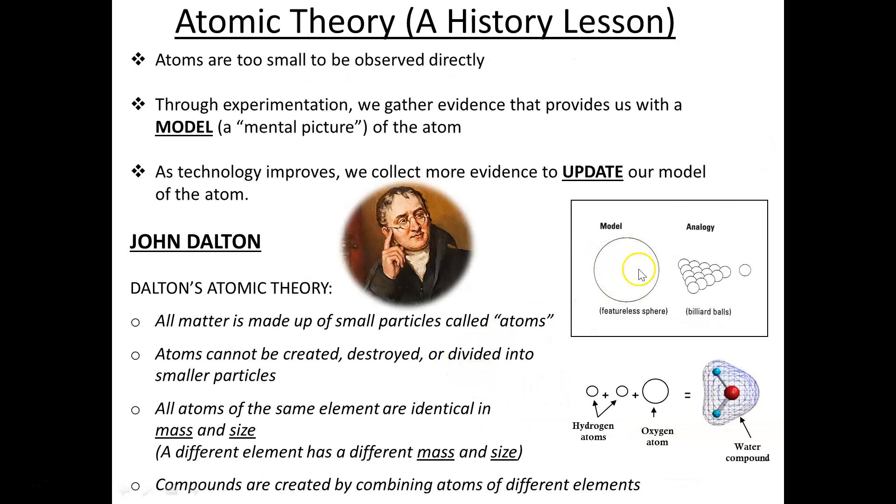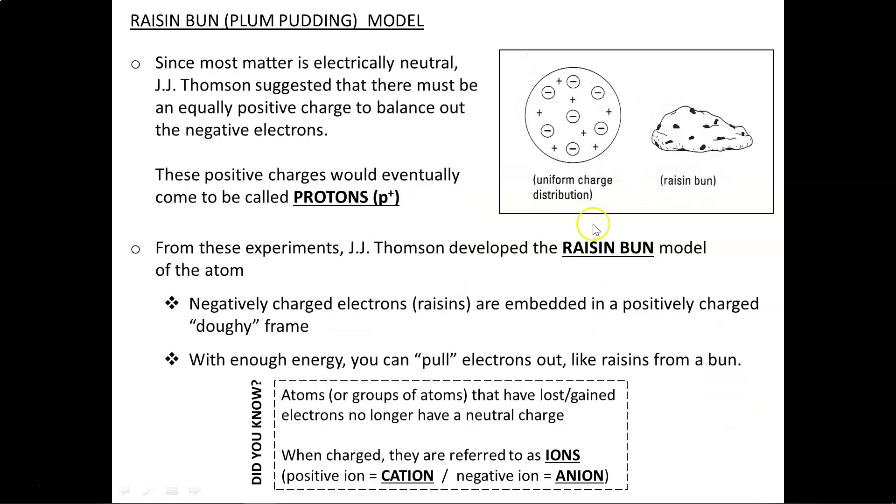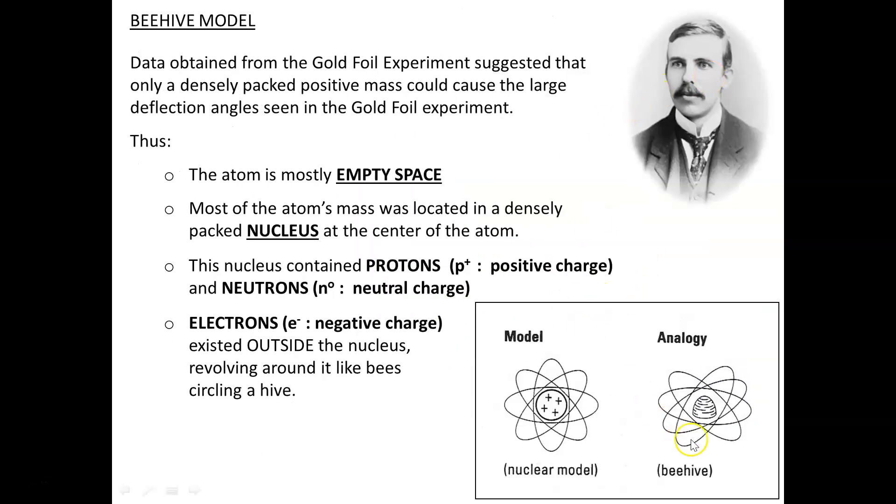So through experimentation, our model of the atom went from a featureless sphere to a raisin bun, and then a beehive.